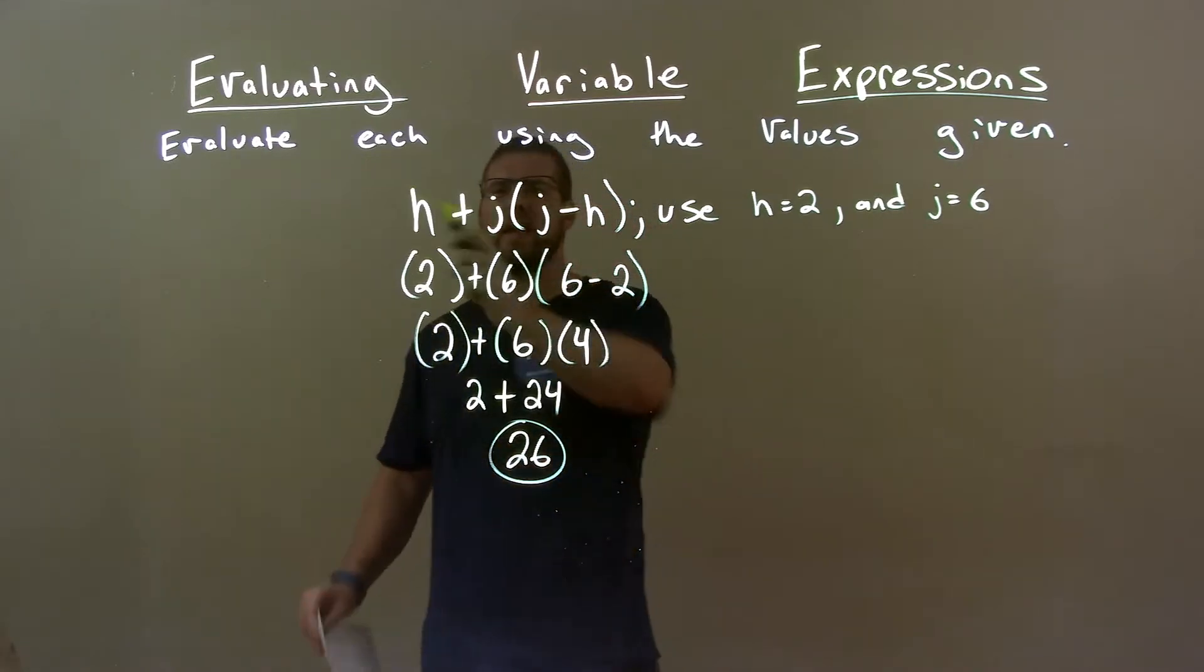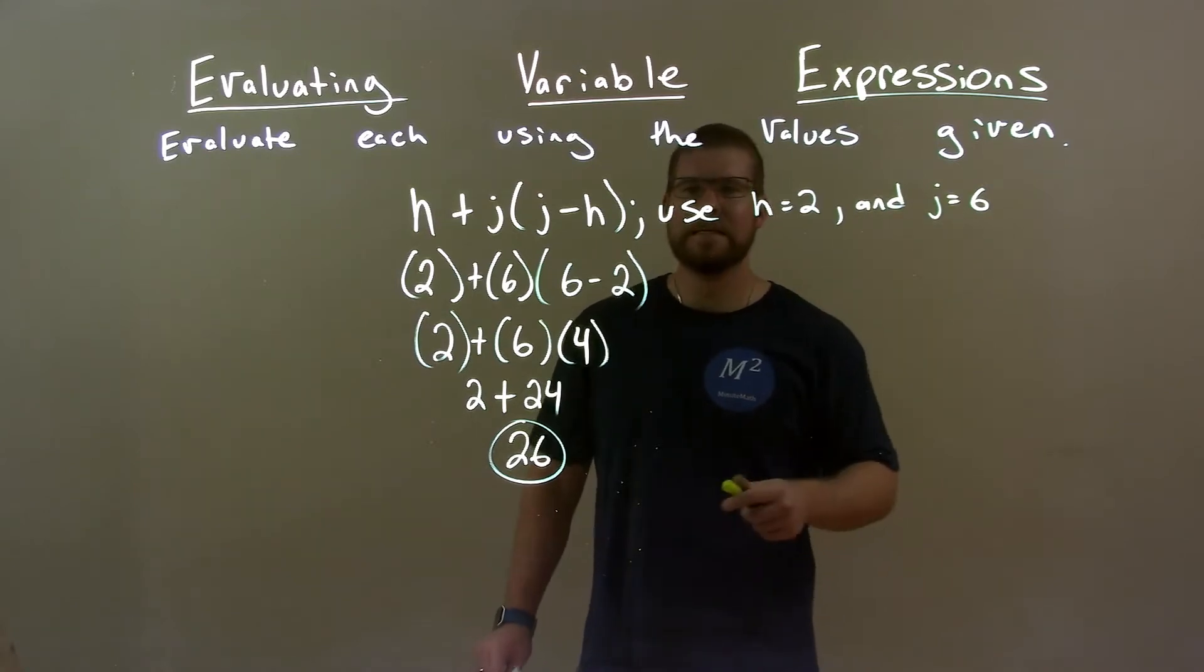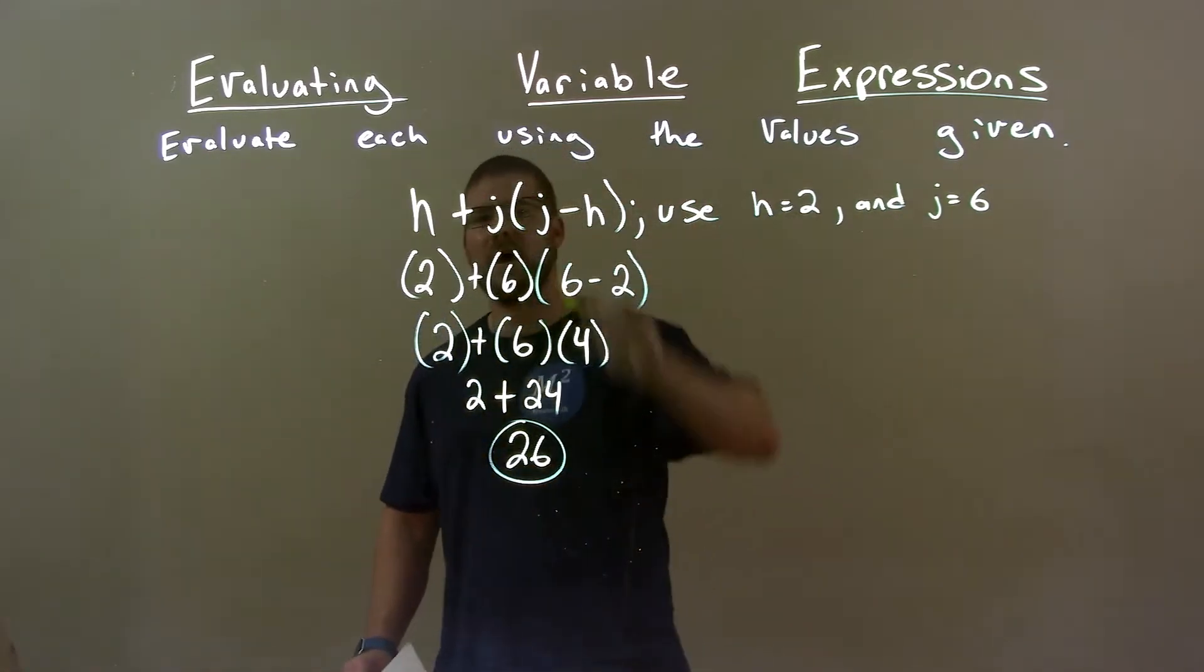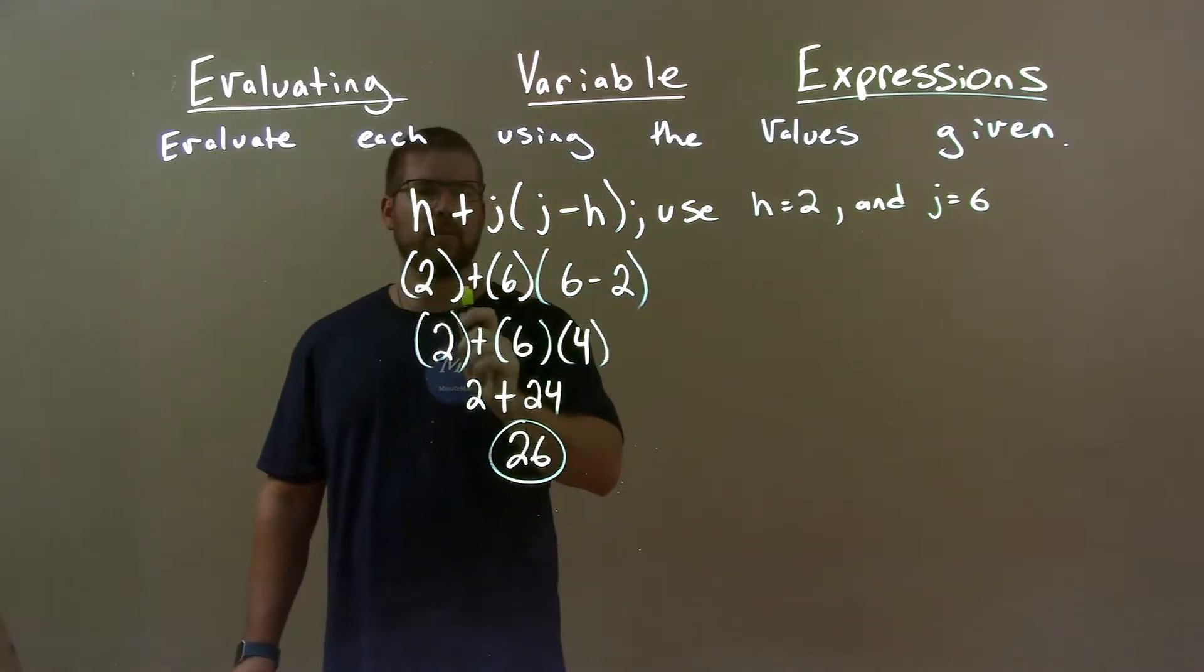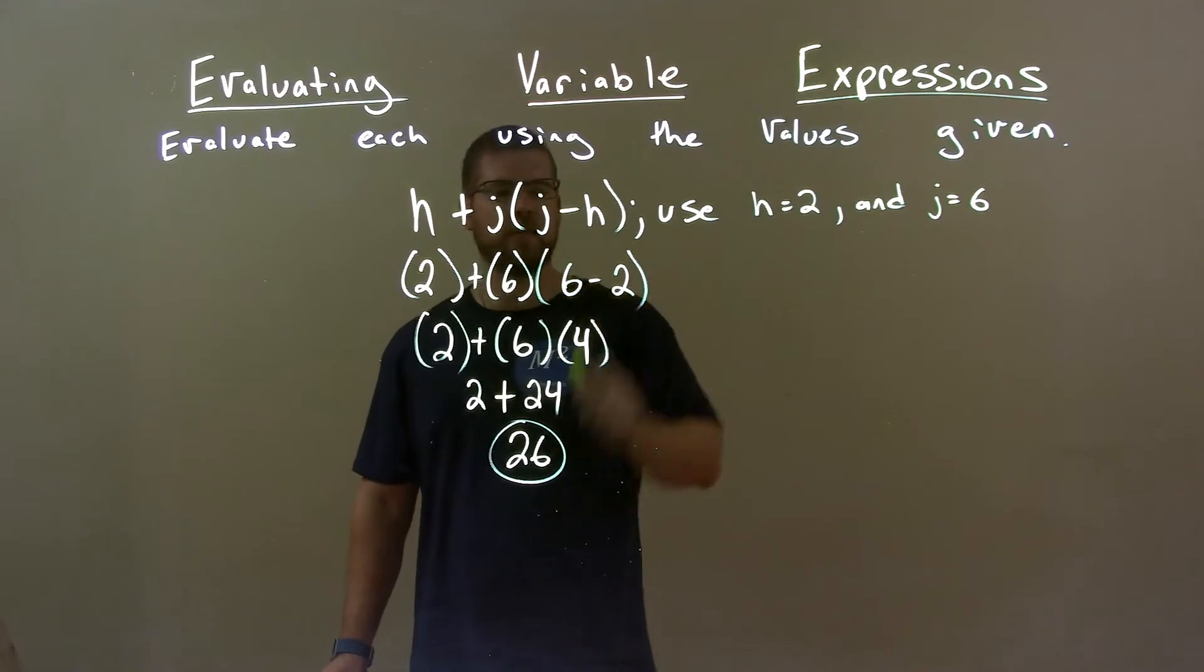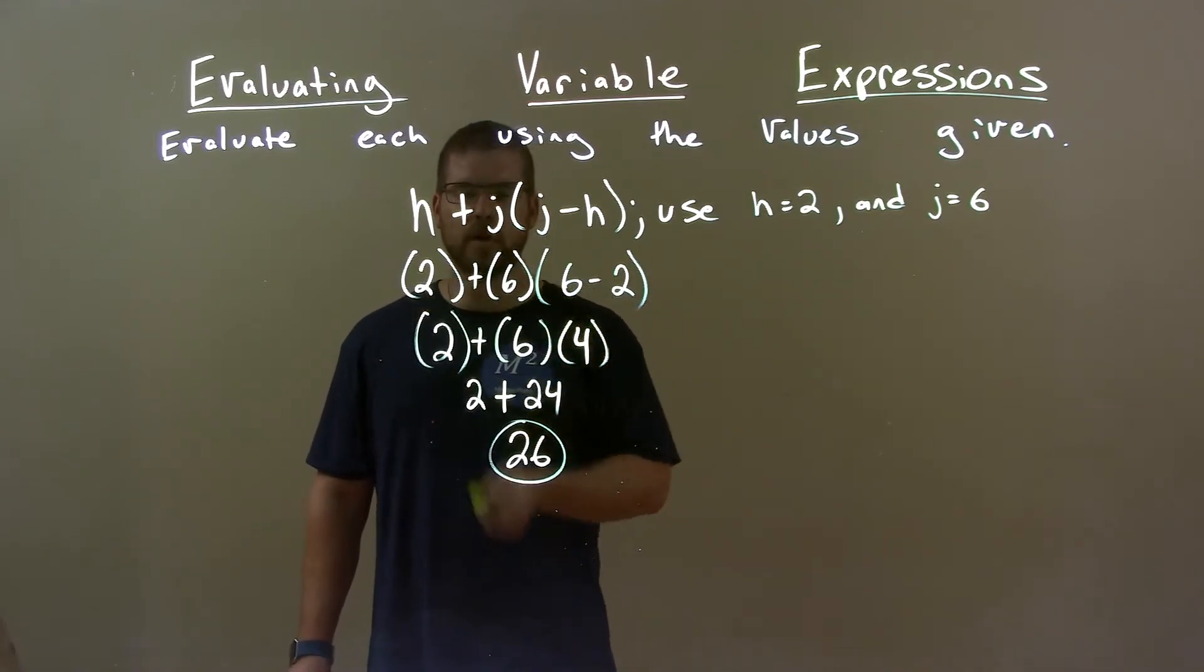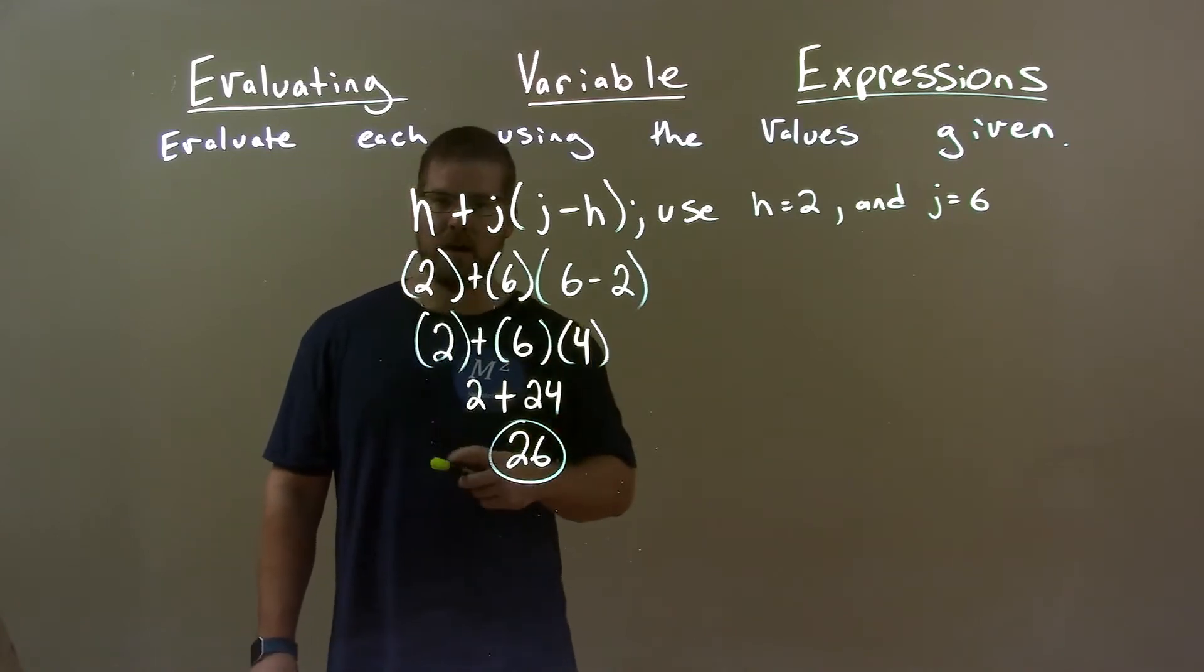Quick recap. We're given H plus J times J minus H. We're using H to be 2 and J to be 6. Substitute these values back in: H for 2, J for 6. 2 plus 6 times 6 minus 2. Parentheses first. 6 minus 2 is 4. 6 times 4 is 24. Add 2 to that, and we get 26 as our final answer.